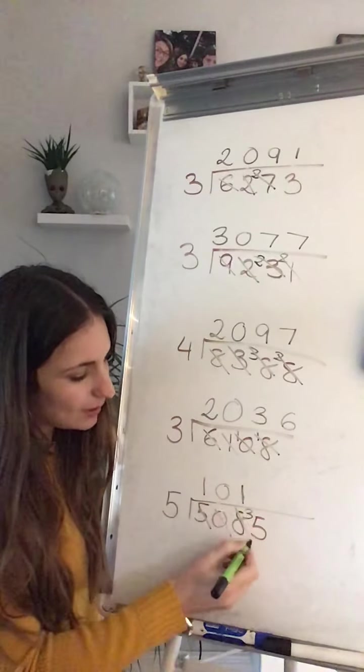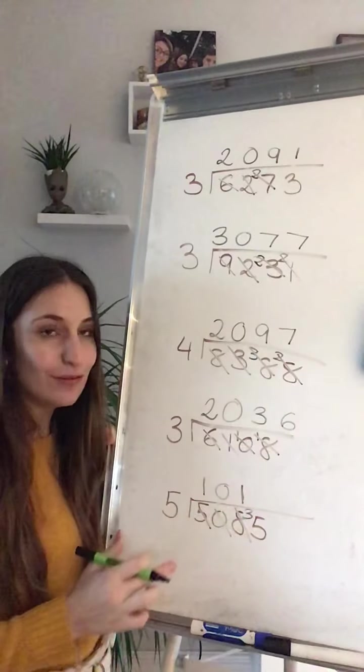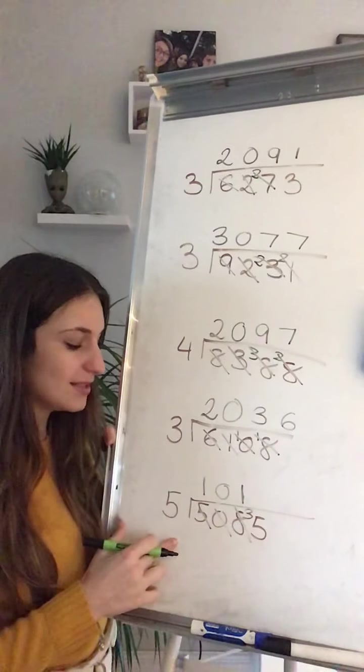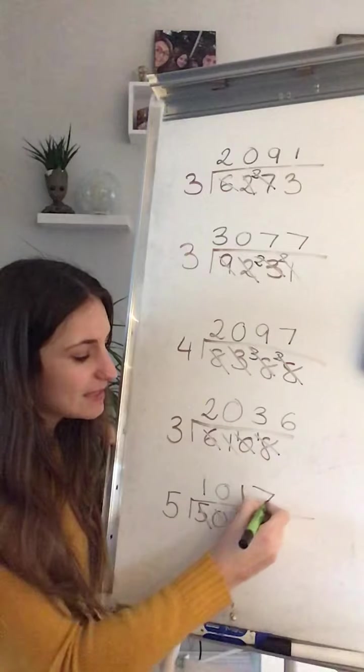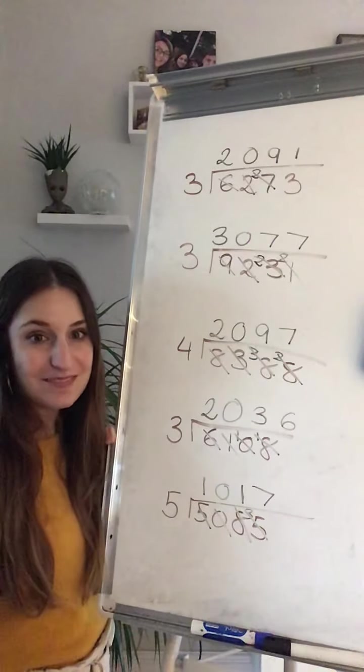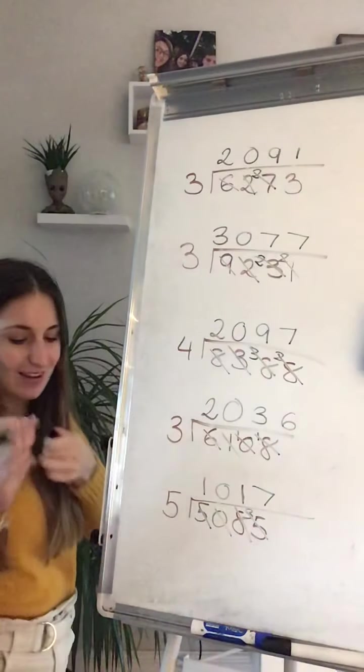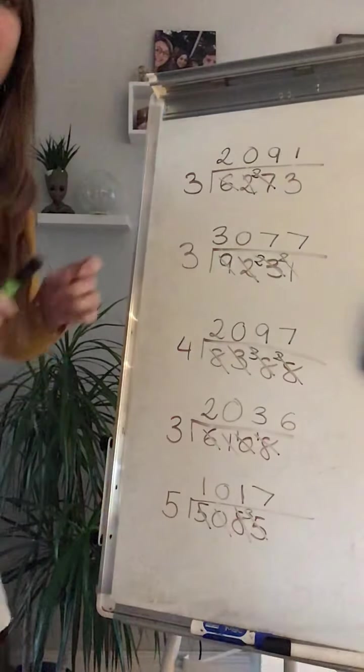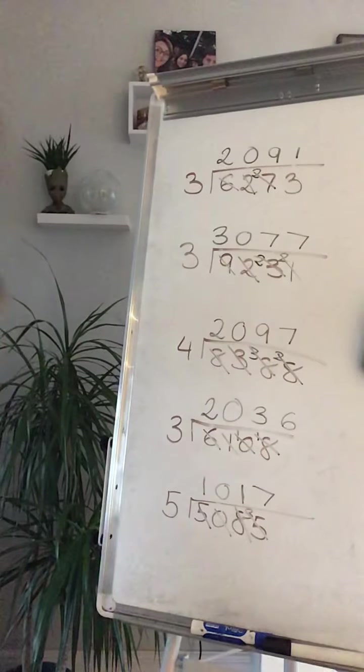I carry 3 with me and I make 35. 35 on my 5 timetable, 7. 7 times 5 is 35. Easy?